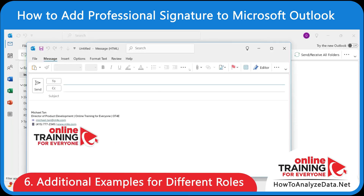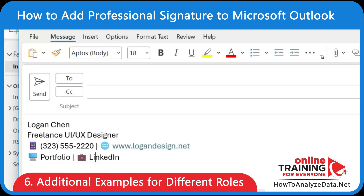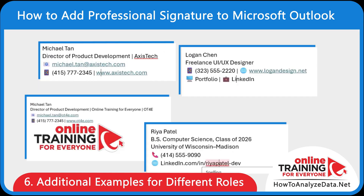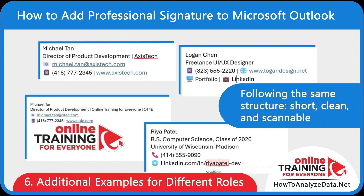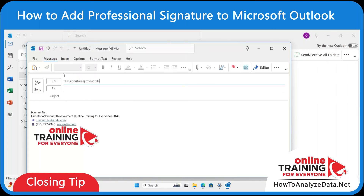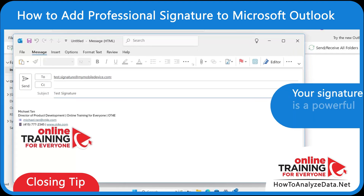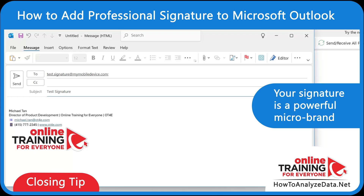Let me show you some other examples of email signatures tailored for different positions: here's one for a Corporate Manager, one for a student applying for an internship, and one for a Freelancer or Creative Professional. Notice that each signature is tailored in tone and content while following the same structure — short, clean, and scannable. Before you adopt a new signature, make sure to send yourself a test email, open it on your phone and computer, and make sure links work, text wraps properly, and nothing appears distorted. Your signature is a powerful micro-brand — done well, it creates trust, professionalism, and consistency every time you hit send.